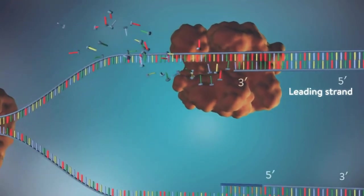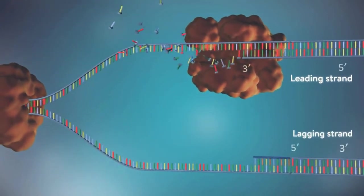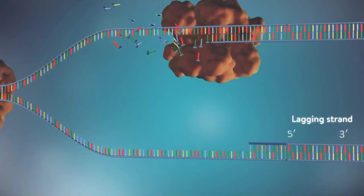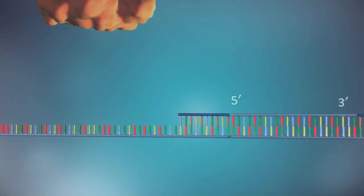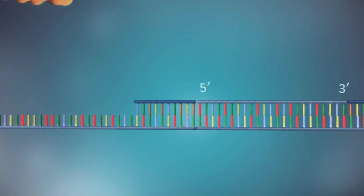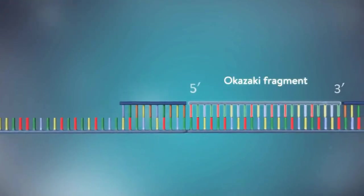The other strand, the lagging strand, cannot be made in this continuous way because it runs in the opposite direction. The DNA polymerase can therefore only make this strand in a series of small chunks called Okazaki fragments.